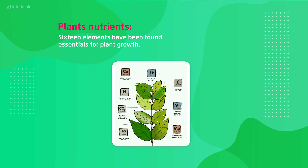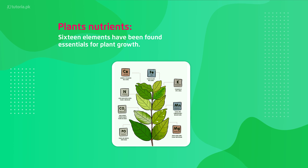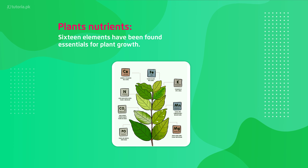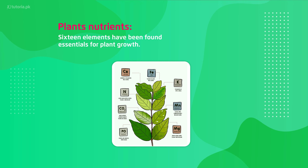Micronutrients are required in small amounts, but plants cannot have proper growth and development without them — every element has an important and specific function. These elements are mostly found in the soil in the form of salts dissolved in water, and they enter into plants through the roots. Let's now look at the macronutrients table.